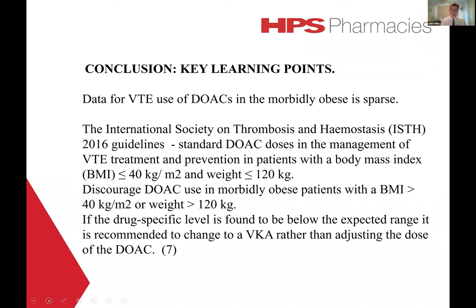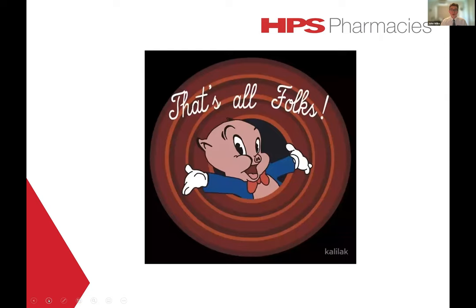To conclude, data for VTE use of DOACs in the morbidly obese is sparse and conclusions are derived from pharmacokinetic and pharmacodynamic considerations. Currently, the best guidelines are those provided by the International Society of Thrombosis and Haemostasis 2016. They recommend a standard DOAC dose for VTE treatment and prevention in patients with a BMI of 40 kilograms per meter squared or less and body weight of 100 kilograms or less. They discourage direct use in morbidly obese patients with a BMI greater than 40 or weight greater than 120 kilograms. If the drug-specific level is found to be below the expected range, it is recommended to change to a VKA rather than adjust the DOAC dose. Thank you for your attendance at this webinar.